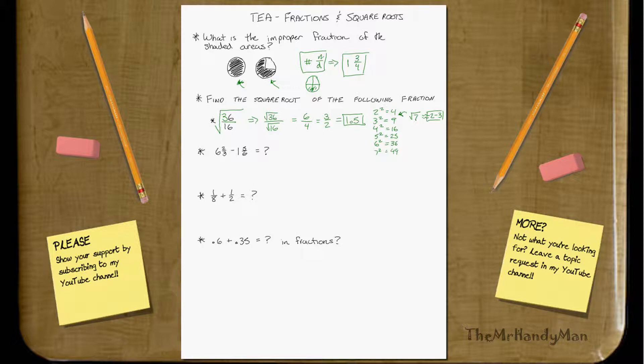6 and 2 thirds minus 1 and 5 sixths. The biggest thing is, a lot of people don't know how to break this down so that you can do it. I just recommend getting out of improper form right away.